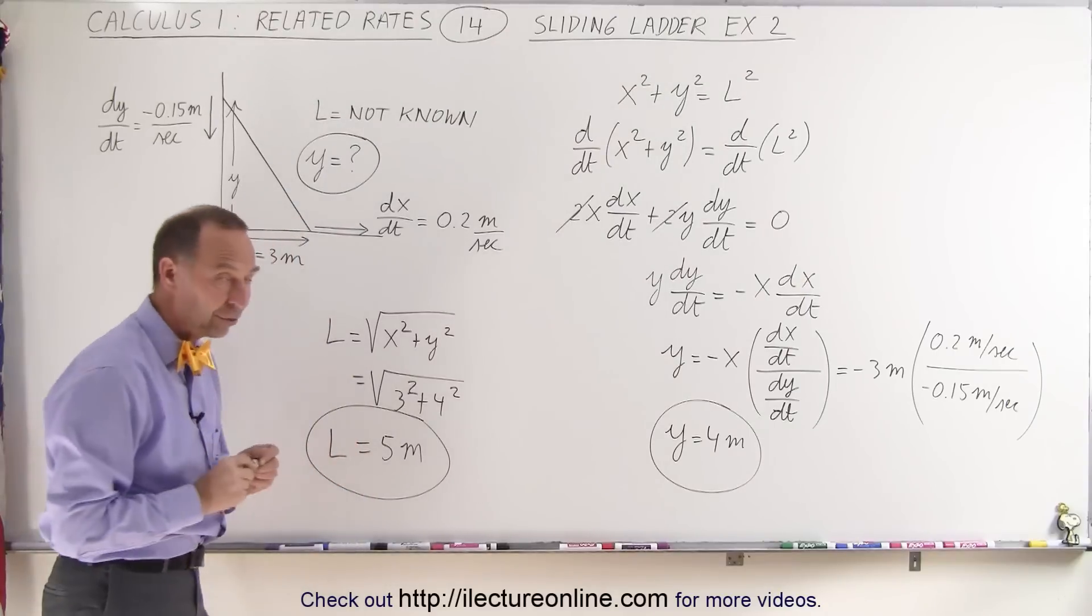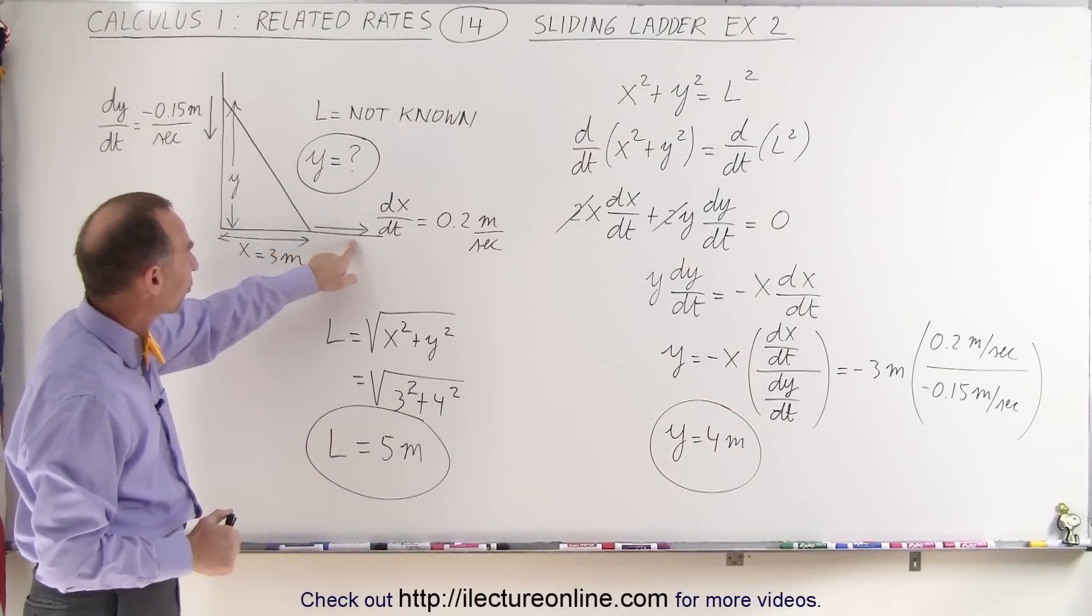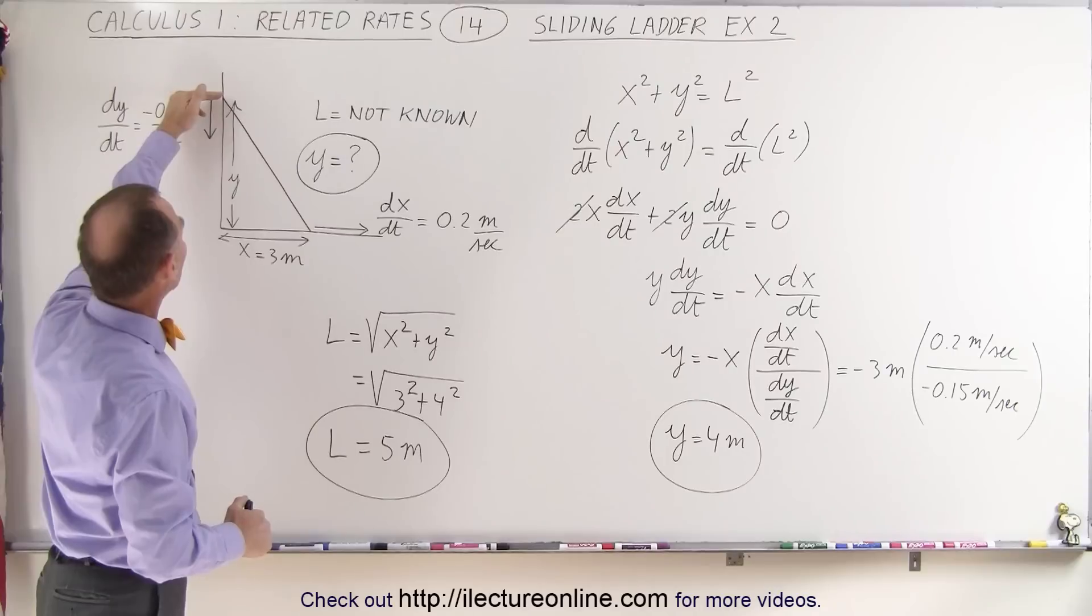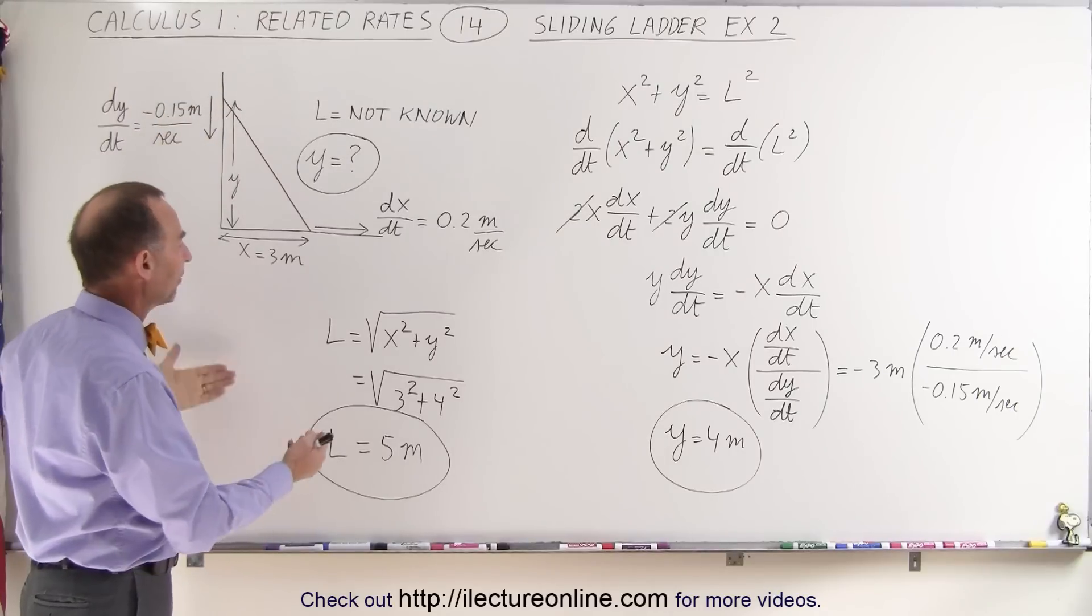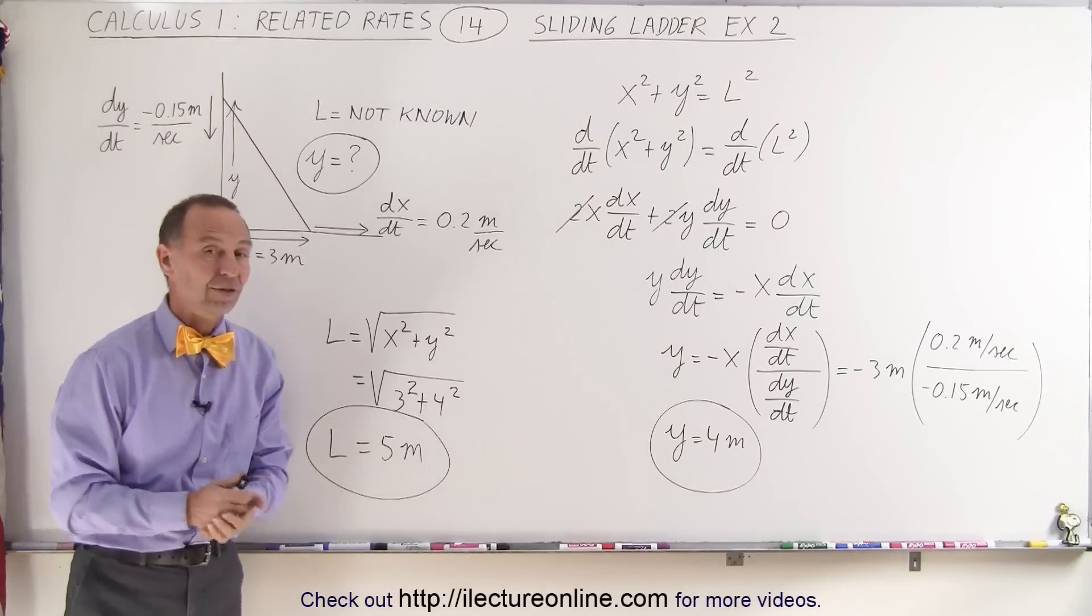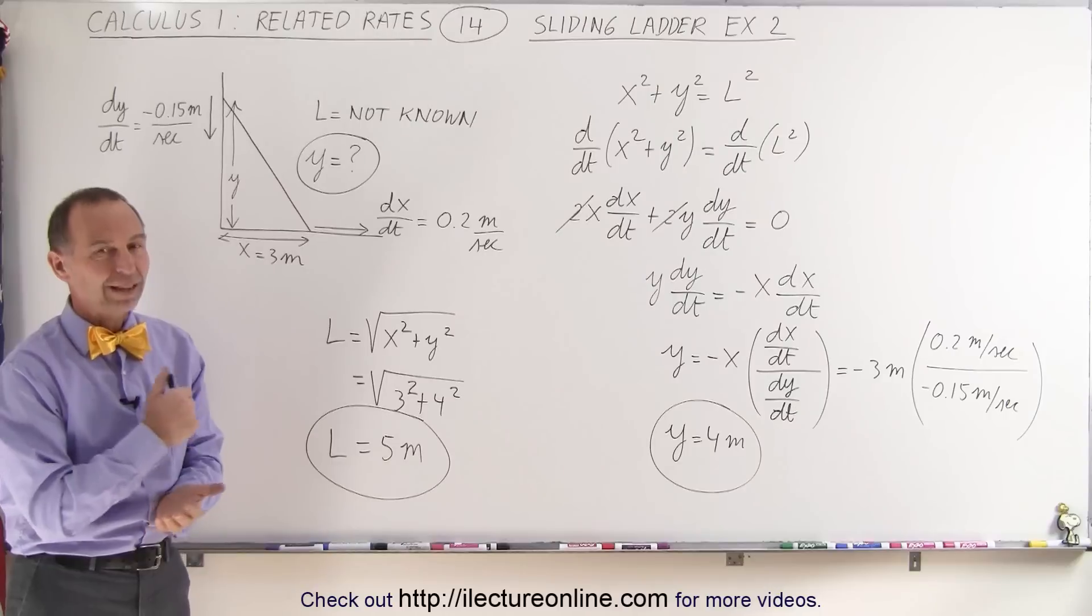So if you're given the rates at which the bottom of the ladder slides away from the wall and the top of the ladder slides towards the floor, you can find the other dimensions of the ladder simply by using the rates. And that's how it's done.